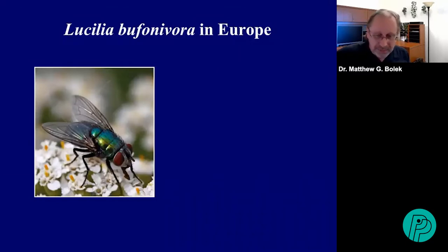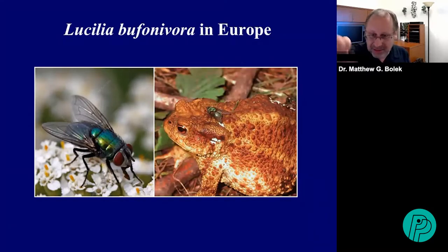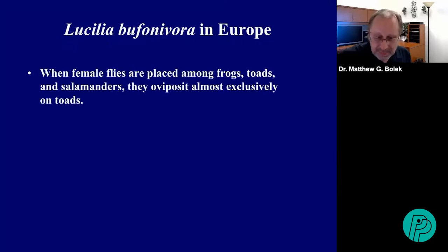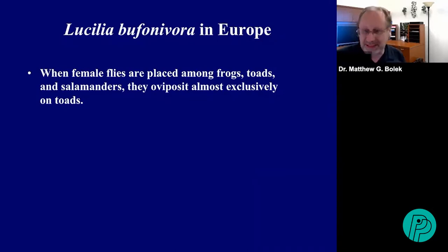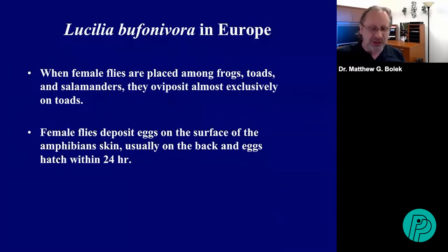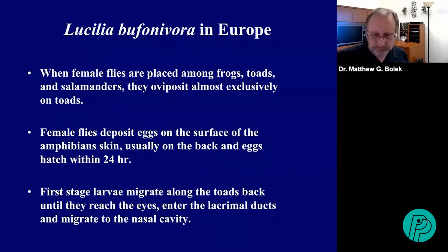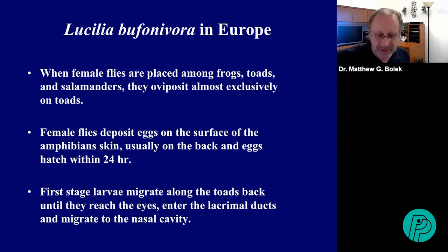In Europe, Lucilia bufonivora has been studied very well and even has a common name: the common toad fly. It's a typical green bottle fly you see commonly on windows, except this particular species finds toads very attractive. When females fly around and see a toad, they land on its back and deposit eggs. When female flies are placed among frogs, toads, and salamanders, they oviposit almost exclusively on toads. Eggs hatch within about 24 hours, and first-stage larvae migrate along the toad's back until they reach the eyes, enter the lacrimal ducts, and migrate to the nasal cavities.